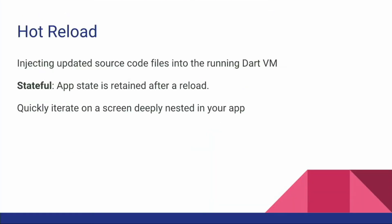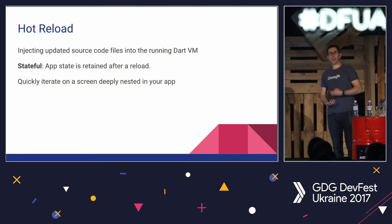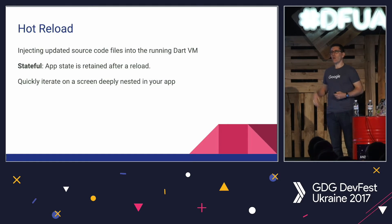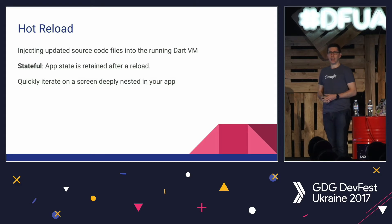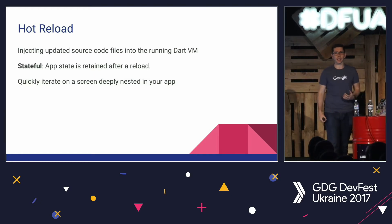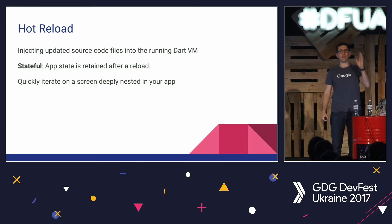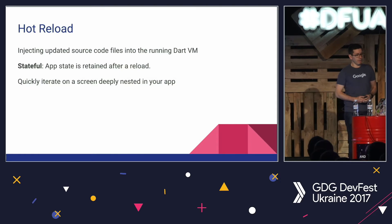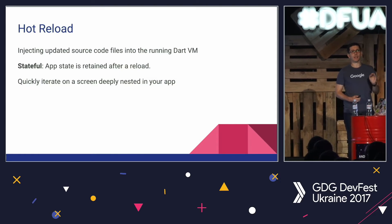Probably one of my favorite features about Flutter is working with Hot Reload. Hot Reload is a feature that allows you to simply execute updates to your application code without having to restart the app over and over again. That allows me to quickly iterate over different functionalities I want to test, and try out different UIs without having to go through every app screen state. The beauty is app state is always retained.